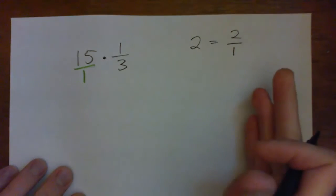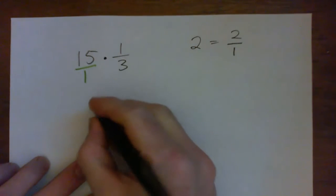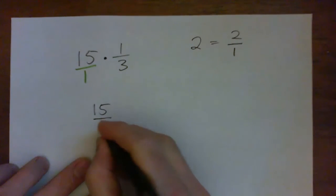Now we can multiply the fractions. We can multiply the tops, multiply the bottoms. 15 times 1 is 15, 1 times 3 is 3.